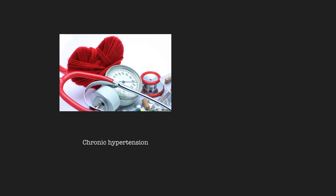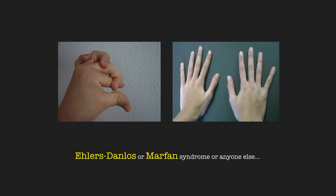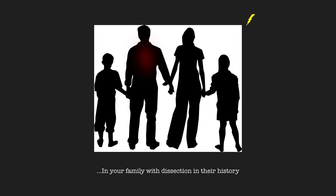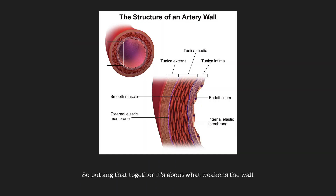Risk factors: chronic hypertension, bicuspid aortic valve, Ehlers-Danlos and Marfan syndrome, or anyone else in your family with dissection in the history, and finally prior cardiac surgery — that's a risk factor as well. So putting that together, it's about what weakens the wall, and allows the blood to split open that weakened intima.